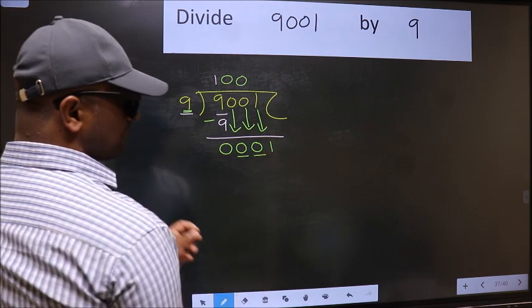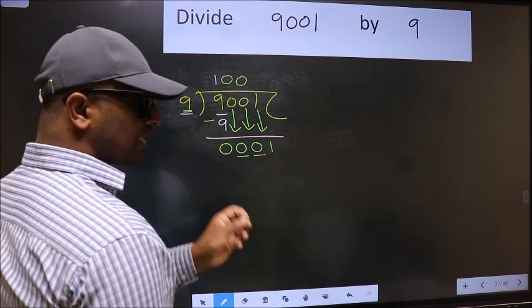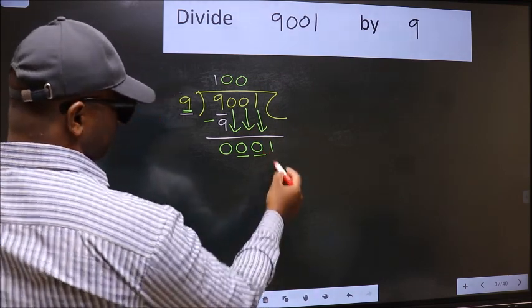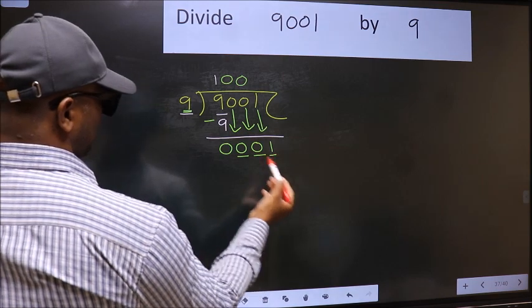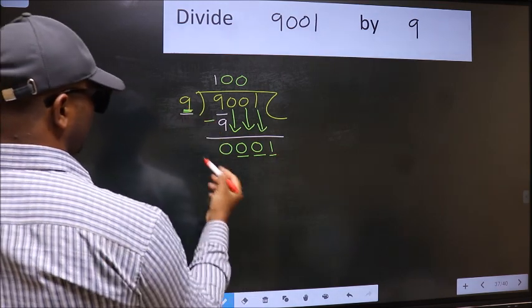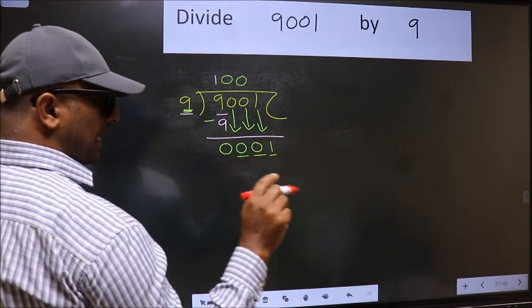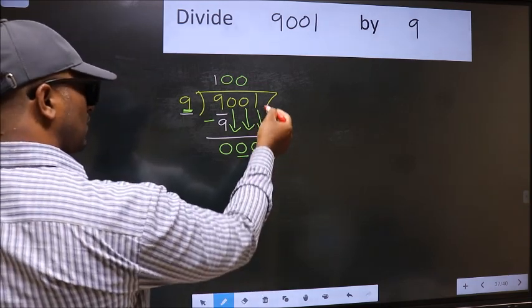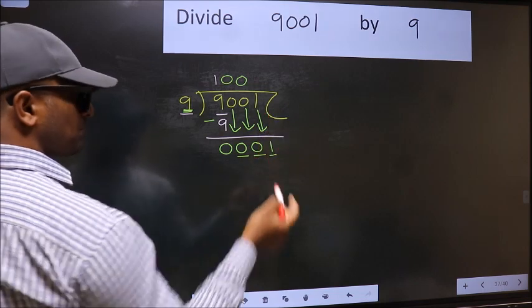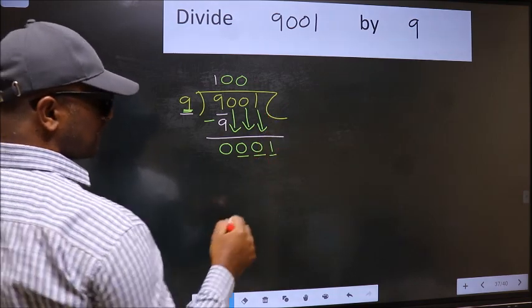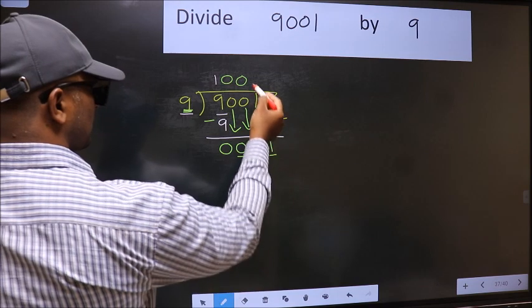After this step, the mistake happens. And the mistake is this: Here we have 1 and here 9. 1 is smaller than 9, and we don't have any more numbers to bring it down. So what many do is they directly put dot, take 0.